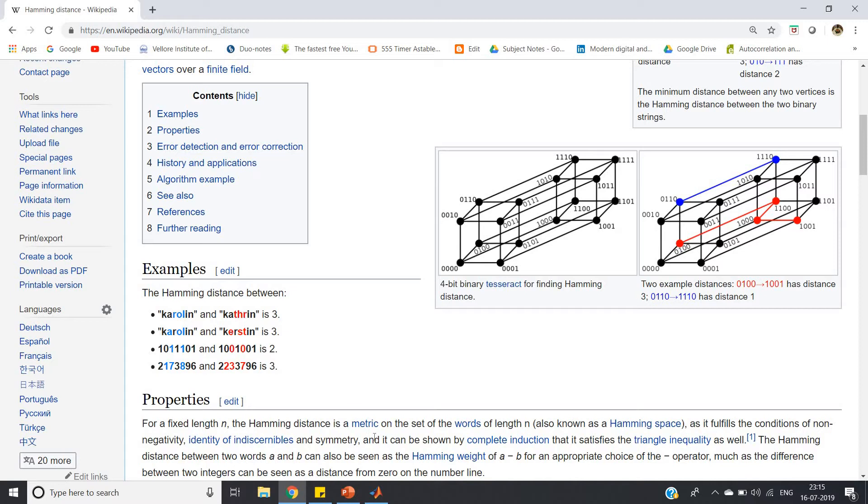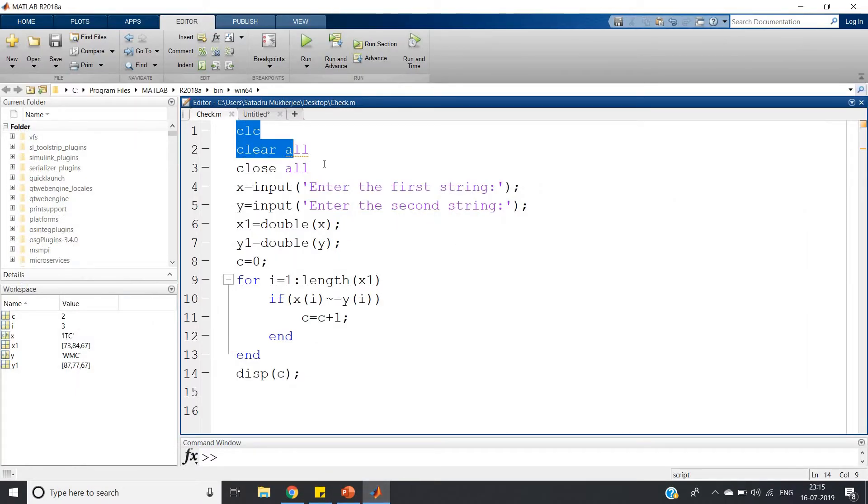Here is a very simple code: clc, clear all, close all. Then x equals input 'enter the first string', y equals input 'enter the second string', and then x1 equals double of x and y1 equals double of y - basically we are converting these two string inputs into double or integer. And c equals zero, one counter we are defining. We are using a for loop from the first index of the array to the last: for i equals 1 colon length of x1. If x of i not equal to y of i, we are going to increment that counter. At the end of the execution, the c variable will store our Hamming distance, so display c.